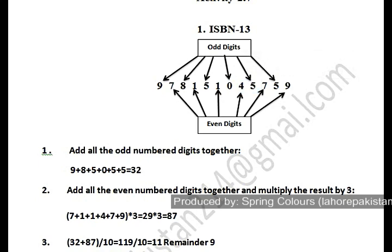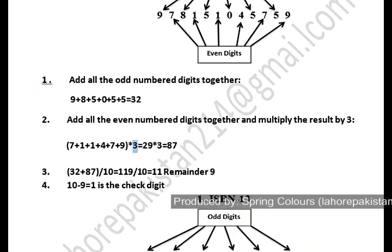In the second step, you separate the digits standing at even places. For example, 7 is at place number 2, at place 4 we have 1, at place 6 we have 1, at place 8 we have 4, at place 10 we have 7, and at place 12 we have 9. We then add these digits together.